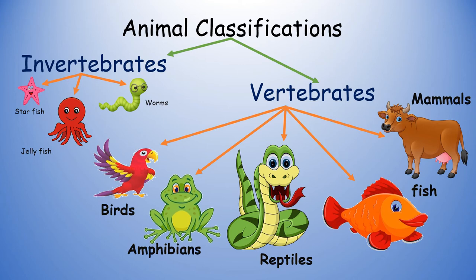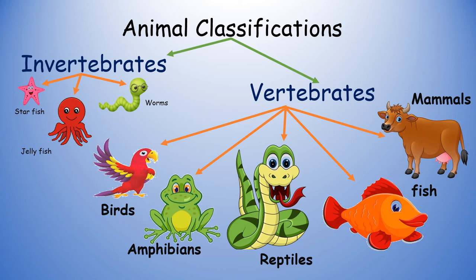Next we will talk about birds. It's an animal that lays eggs and has wings and a body covered with feathers. Examples of birds are duck, hen, parrot, pigeon and ostrich.